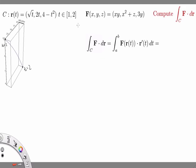Now our vector field F(x, y, z) is given by (xy, x² + z, 3y). So this thing we're trying to compute, we write the integral over C of F · dr.